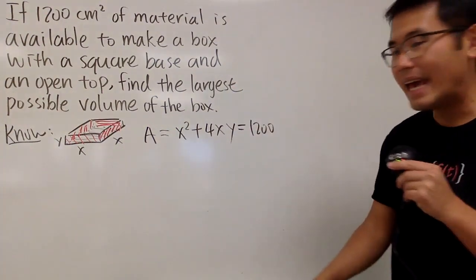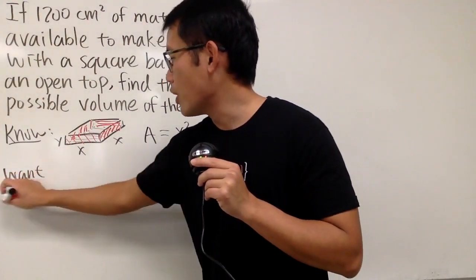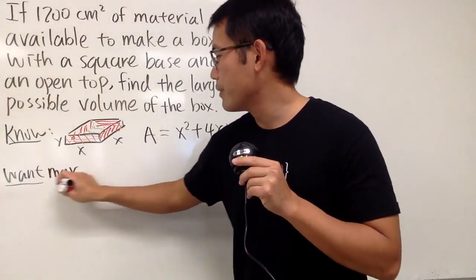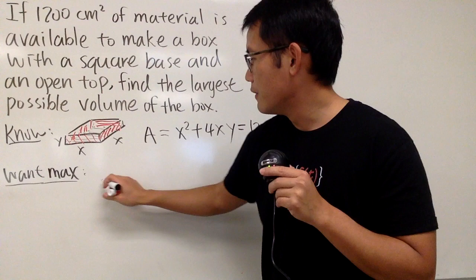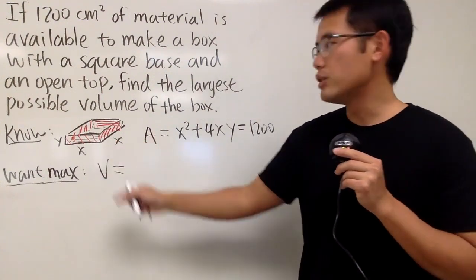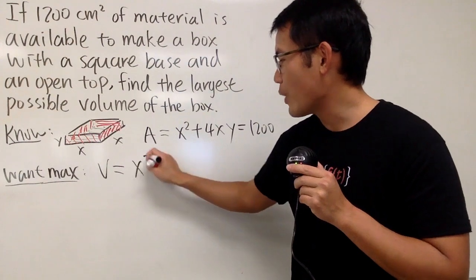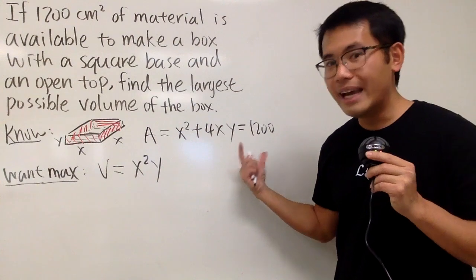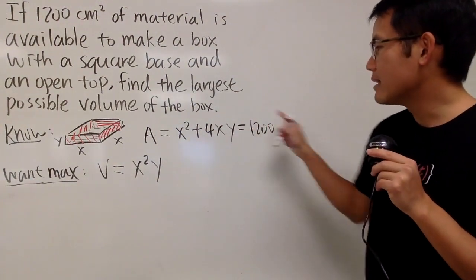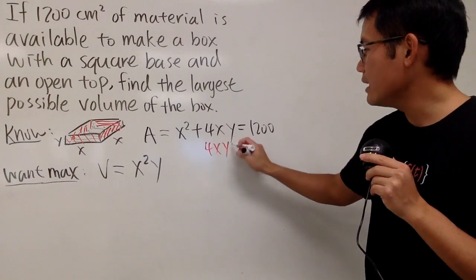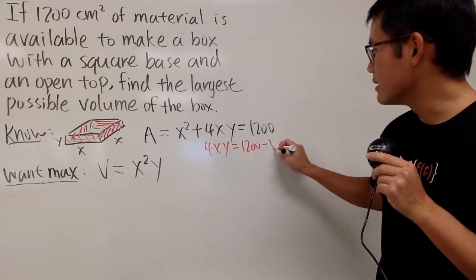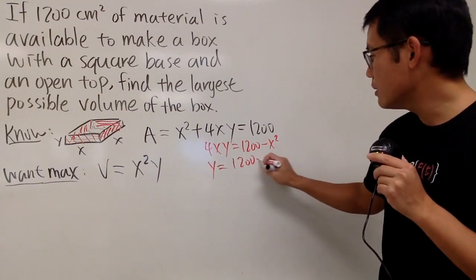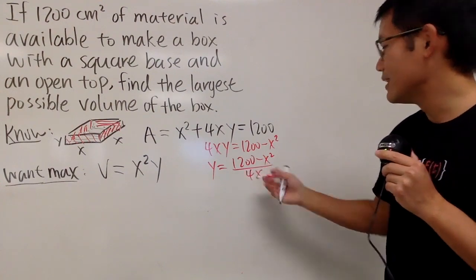So that's what we have. And let's go ahead and put down what we want to know. This time, we are trying to get the biggest possible, so we want the maximum. And we are talking about the volume, so I'll just put down V. And the volume of this box is just x times x times y, which is just x squared y, like this. And now, look at this. We will isolate the y. So to do that, let me minus the x squared on both sides. So we get 4xy equals 1,200 minus x squared, and then divide everybody by 4x. So it looks like we have y equals 1,200 minus x squared over 4x, like this.